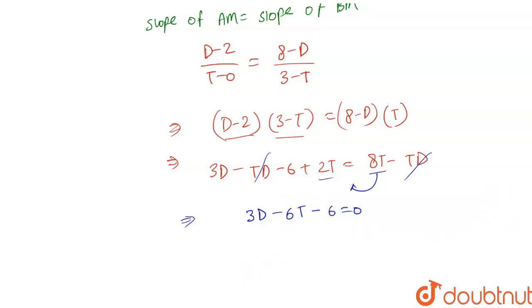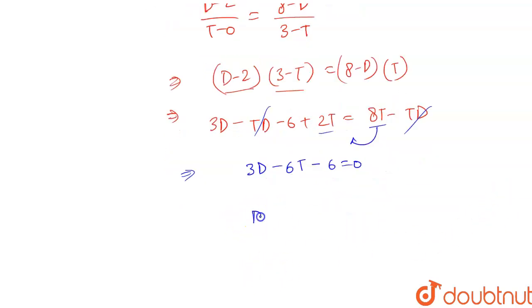We can say, let's take 3 common, then we have 3(d - 2t - 2) = 0. So finally we can say that d - 2t = 2 is the required condition for t and d.